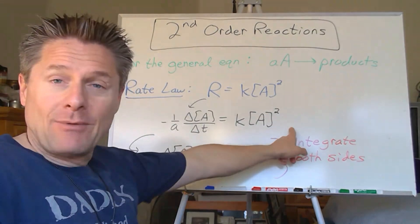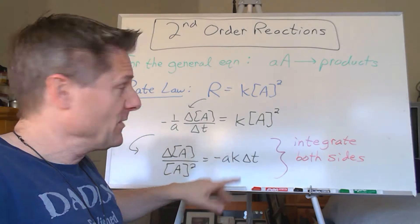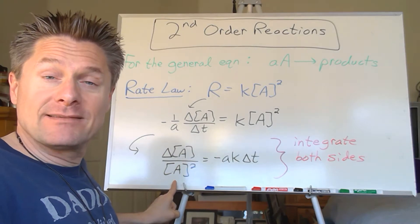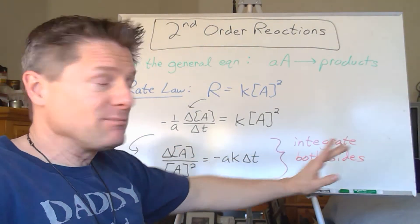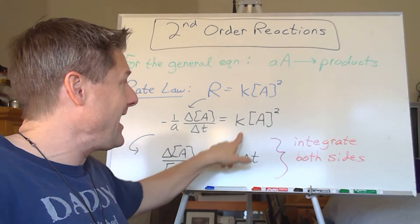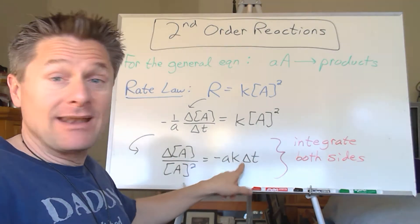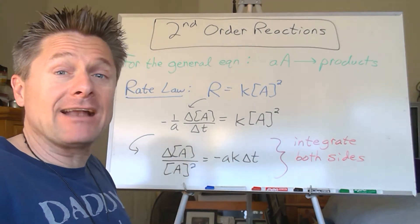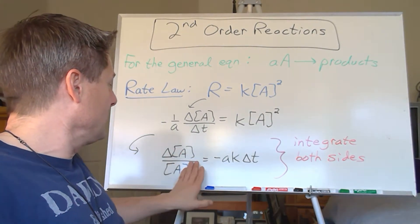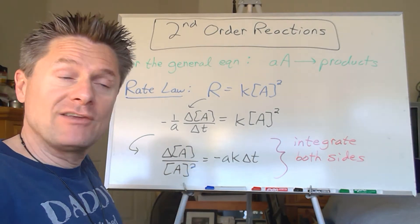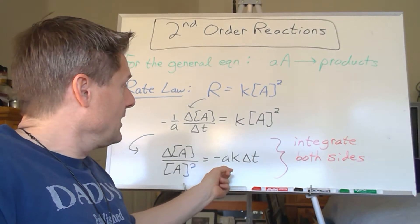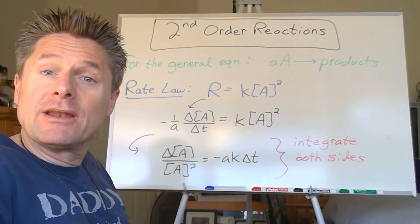Let's get delta T on the right side and all the A stuff on the left side. So divide both sides by the concentration of A squared — we get dA over A squared on the left-hand side. Multiply both sides by delta T, and account for the negative sign and A. So we get negative A times the rate constant times delta T on the right-hand side. That right-hand side is exactly the same for zero, first, and second order. For first order it was just the concentration; second order it's squared, so that will change things. If you're a calculus fanatic, integrate both sides and see what you get.